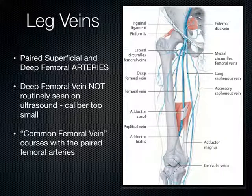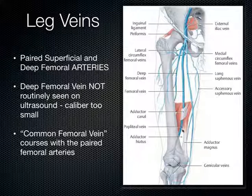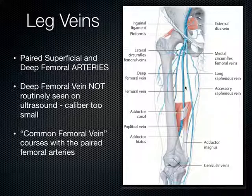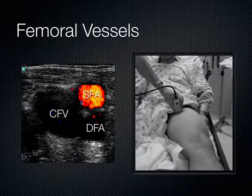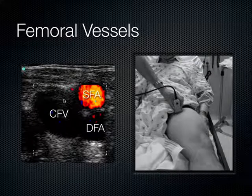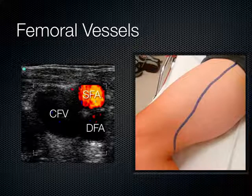For lower extremity DVT scanning, the common femoral vein comes from the iliac, travels down the leg, passes through the adductor canal, and becomes the popliteal vein. The adductor canal is difficult to visualize. The vein is medial to the arterial structures — a mnemonic: venous, penis, it rhymes. In the popliteal fossa, the vein is more superficial to the artery. Superiorly there's a medial-lateral configuration, but structures become anterior-posterior quickly as you march distally.